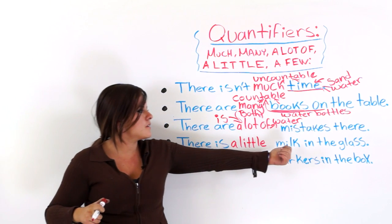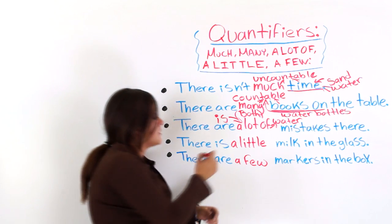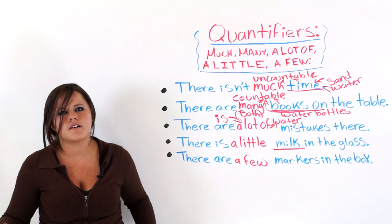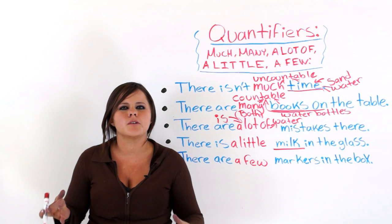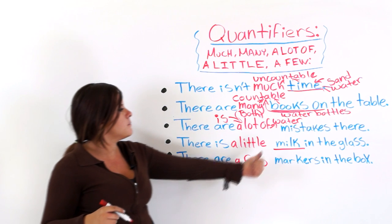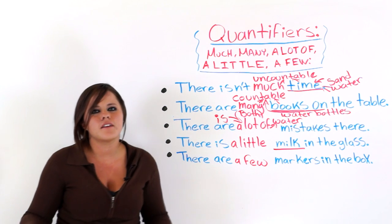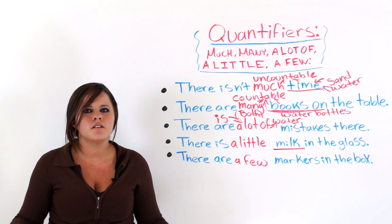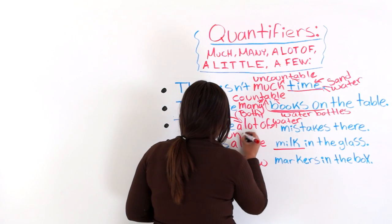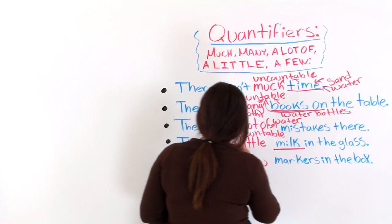There is a little milk in the glass. A little is for uncountable. We're talking about milk — not milk cartons, not milk gallons. We're not putting them into units. So right here we're talking about an uncountable noun. You can't say 'there are a little cartons of milk' — always for uncountable stuff.